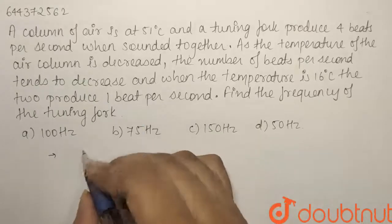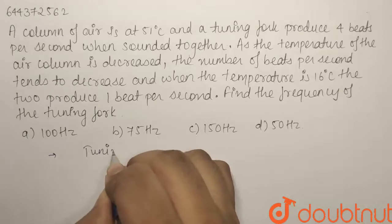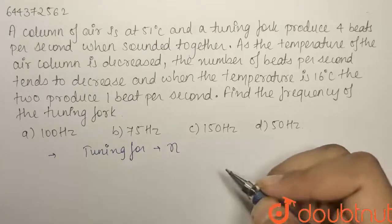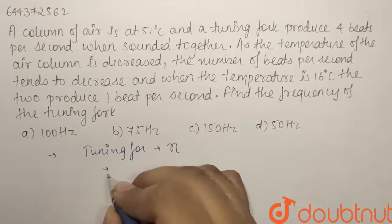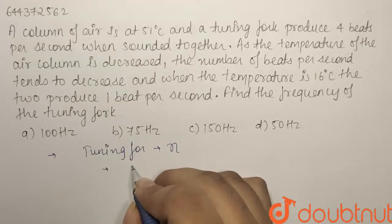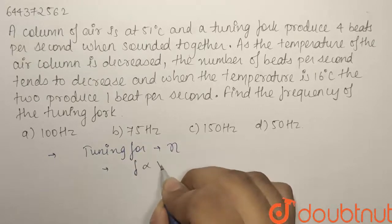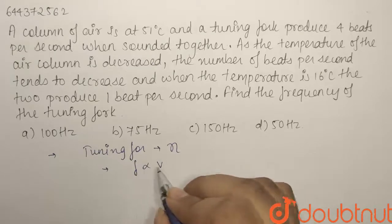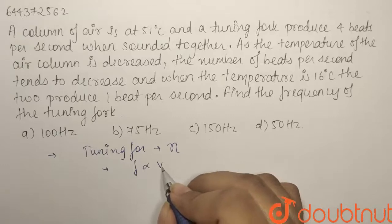Let us assume frequency of tuning fork equals eta. In the first case it is producing 4 beats per second. The important concept here is that frequency is directly proportional to velocity. We write fundamental frequency as V by 2L.